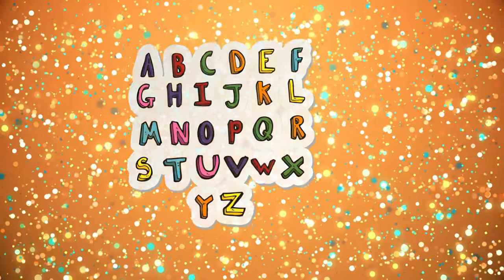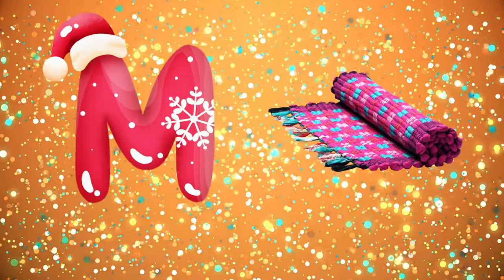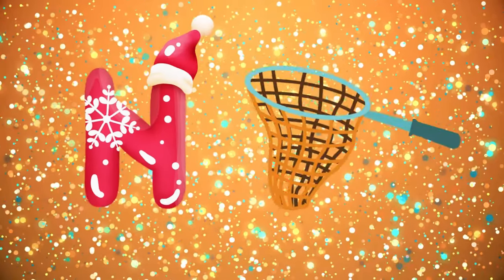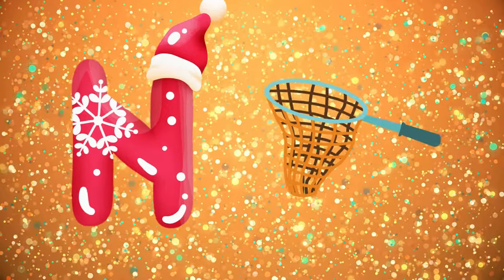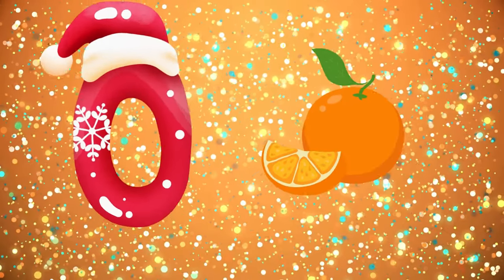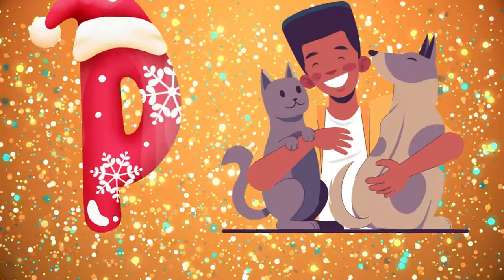M is for mat, m-m-mat. N is for net, n-n-net. O is for orange, o-o-orange. P is for pet, p-p-pet.